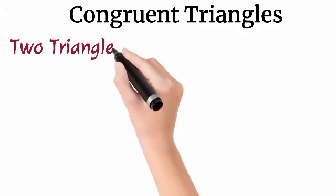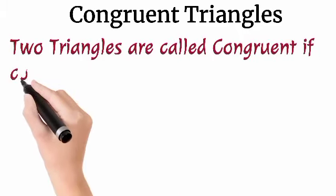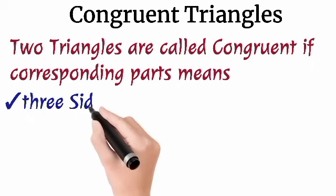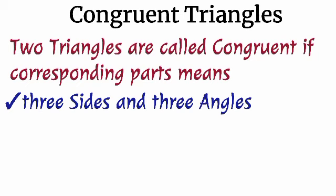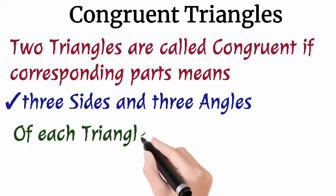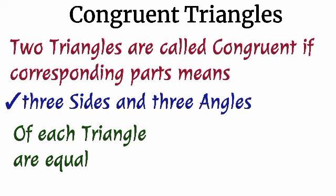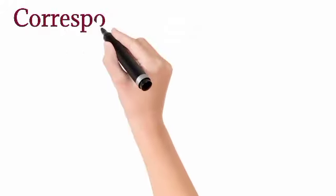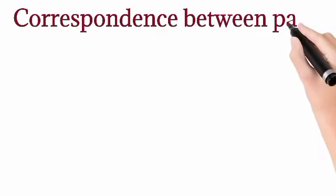So let's see this video. First of all, I will discuss about the congruent triangles. How the triangles will be congruent? Two triangles are called congruent if the corresponding parts. Now, let's see about the parts. How many parts of a triangle are and which ones are. A triangle has three sides and three angles. So, total six parts of a triangle should be equal to three sides and three angles of another triangle. If it happens, then the triangles will be called as congruent triangles.